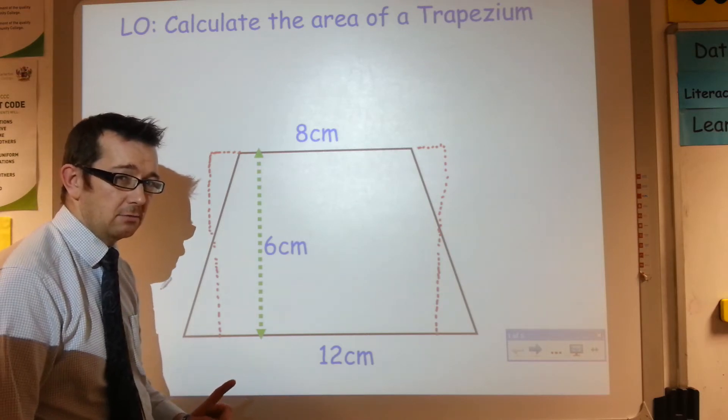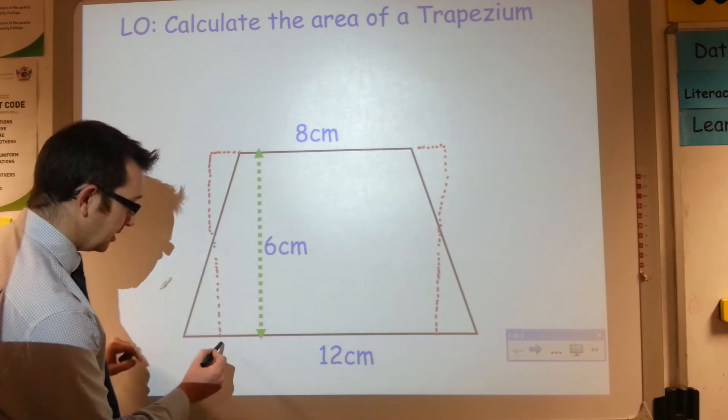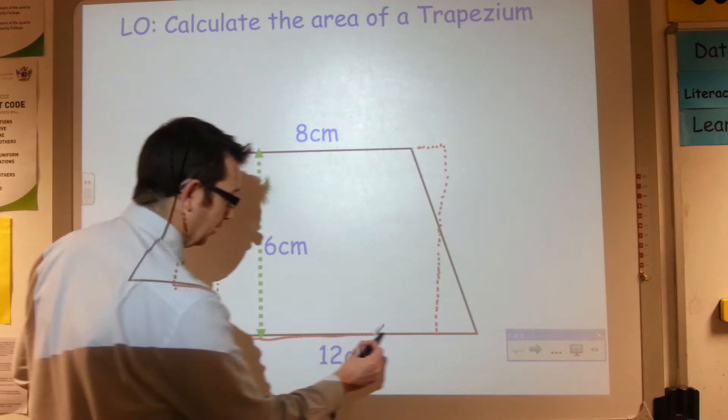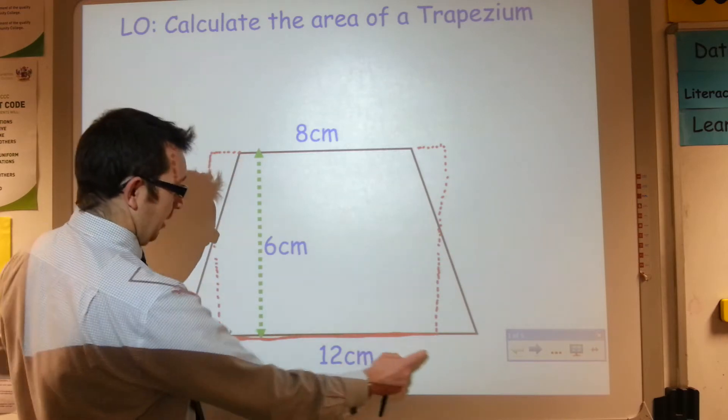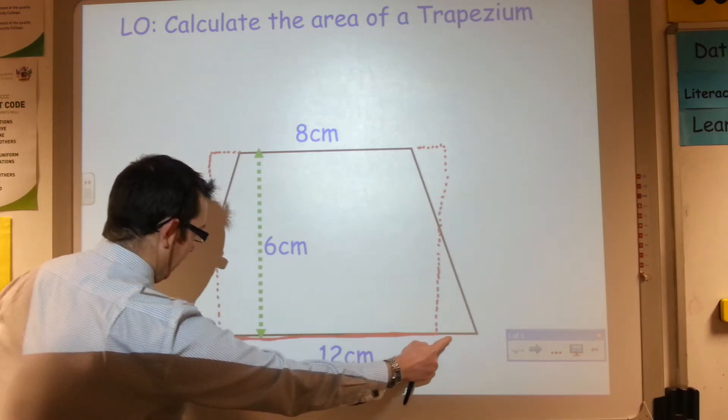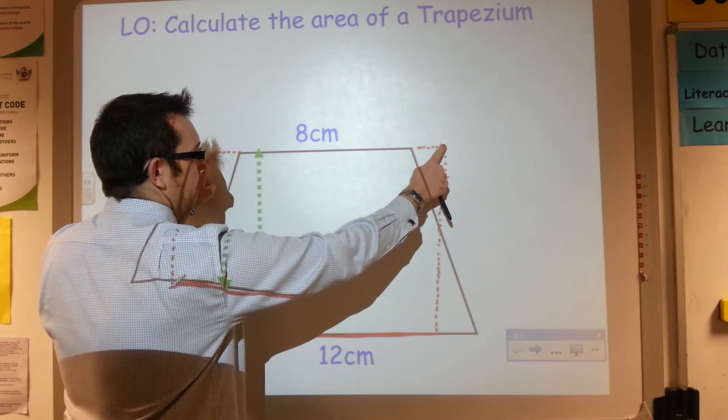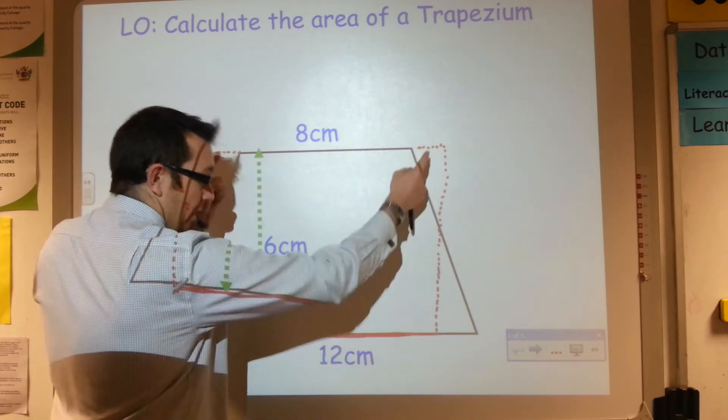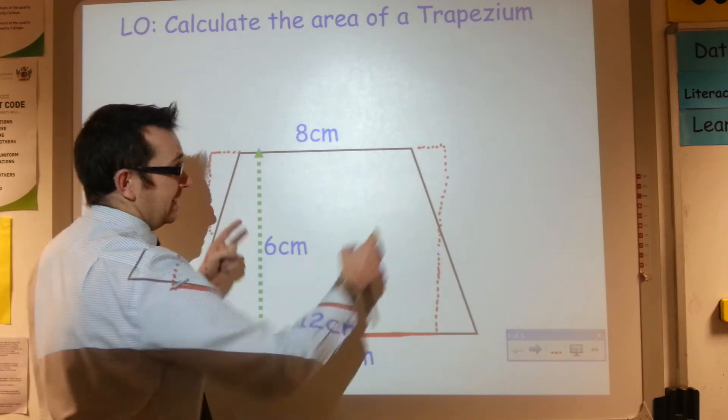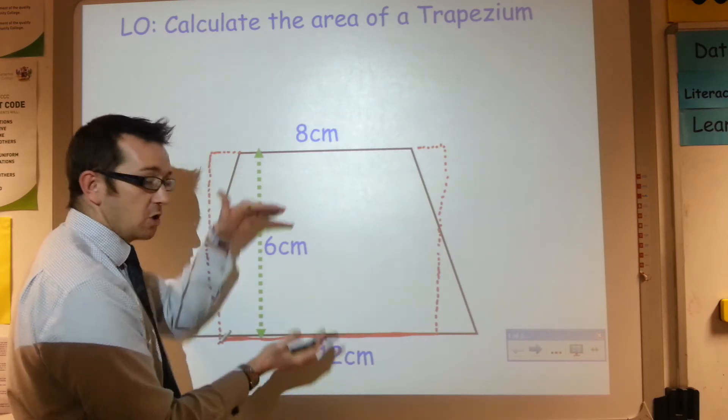Now the height of the rectangle is six centimeters, but I need to know the base of the rectangle. And what's happened is that this line on the base has come in a little bit and the line on the top has gone out a little bit. And what's actually happened is that it's met partway in the middle between the 12 and the 8. So we're actually looking for the average of those two lengths, the top and the bottom.